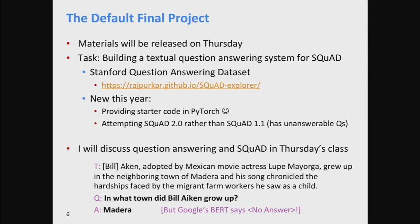First, the starter code we're providing this year is in PyTorch to fit in with what we've done for the rest of the class. Second, the SQuAD team released a new version — SQuAD 2.0 — and we're going to use that for the class this year. The essential difference in SQuAD 2.0 is that in SQuAD 1.1, every question had an answer in the passage of text, whereas in SQuAD 2.0, a lot of questions don't have answers.